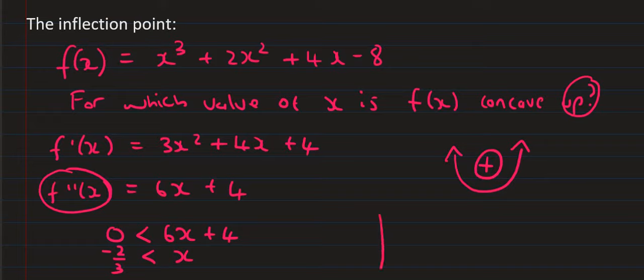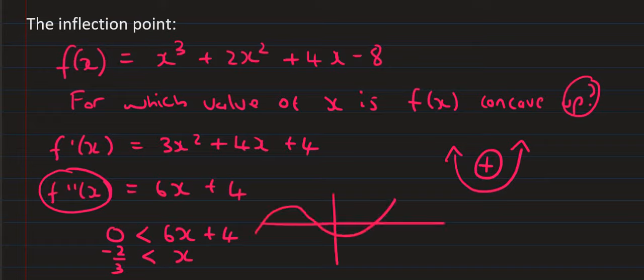What that means is the graph does something like this. Negative 2 over 3 is over here. When x is greater than negative 2 over 3, the graph is concave up — it's smiling. And when x is to the left of negative 2 over 3, the graph is concave down, which is the sad face.